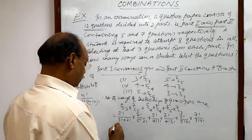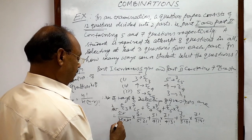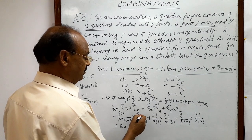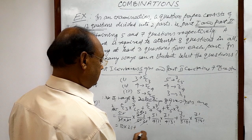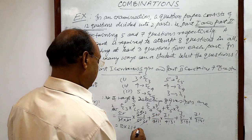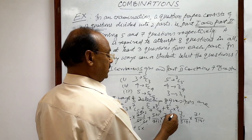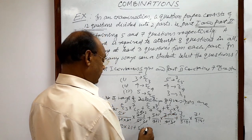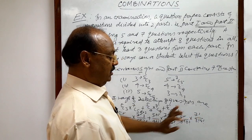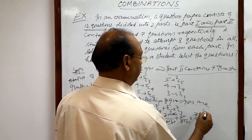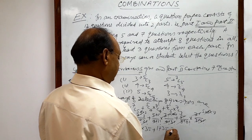Now let us simplify. For 5C3: 3! cancels, giving 4 × 5 = 10; dividing by 2 gives 10. For 7C5: 5! cancels with 7!, leaving 6 × 7; dividing by 2 gives 21. For 5C4: simplifies to 5. For 7C4: 4! cancels, leaving 5 × 6 × 7; 3! = 6 cancels, giving 5 × 7 = 35. For 5C5: equals 1. For 7C3: similarly simplifies to 35.